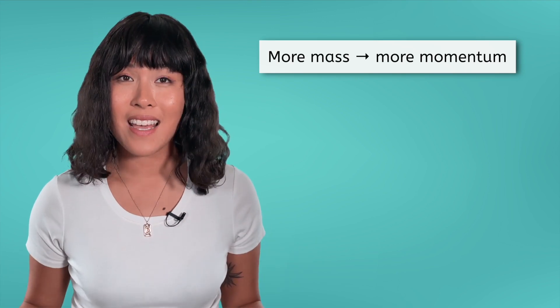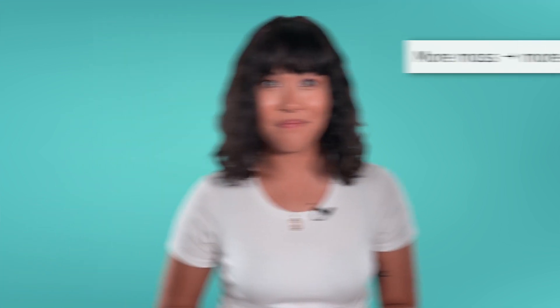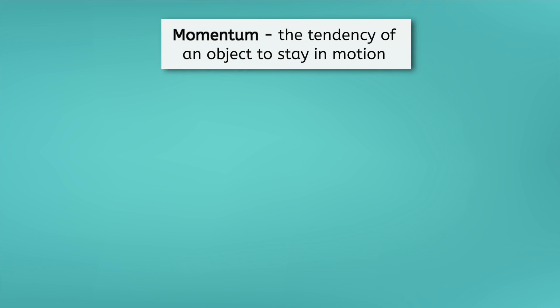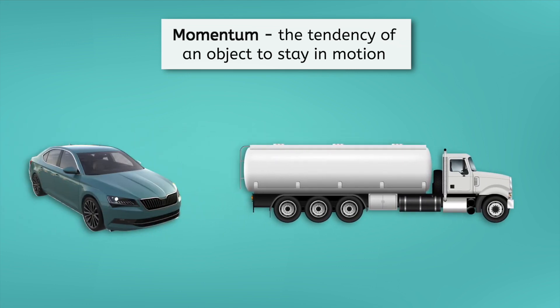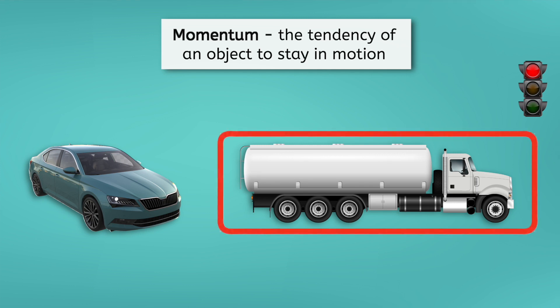But we said that velocity isn't the only factor that affects momentum — it can also be increased with a larger mass. If a friend tosses a tennis ball to you, you can probably catch it easily. But what if instead they take the bowling ball we were using earlier and toss it to you at the same velocity? You would likely struggle a bit more to catch the bowling ball because it has more mass and therefore more momentum. We can think of momentum as the tendency of an object to stay in motion. Imagine a large truck and a small car on the road, both traveling at the same speed but needing to stop at a red light. Which one will be harder to stop? The truck, because it has more mass and therefore more momentum.